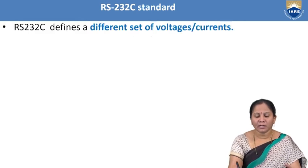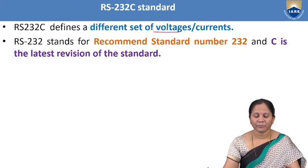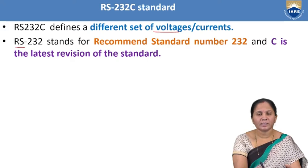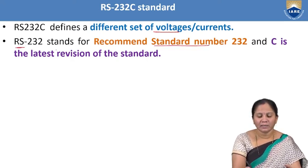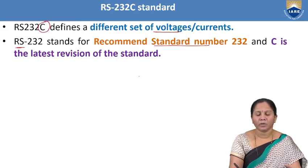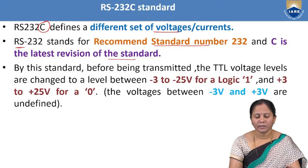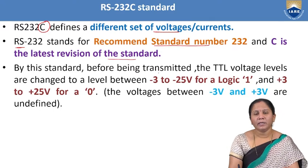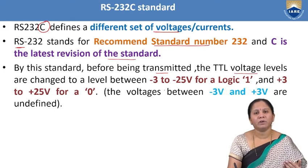RS-232 defines different sets of voltages and currents. RS stands for Recommended Standard number, and C is the latest version of that standard. Before data is transmitted, the TTL voltages should be converted into RS-232 voltages.